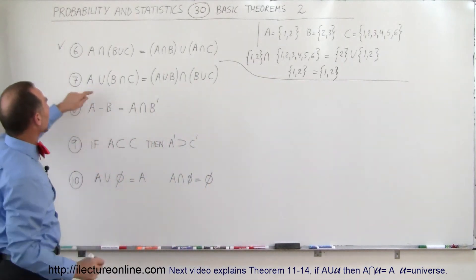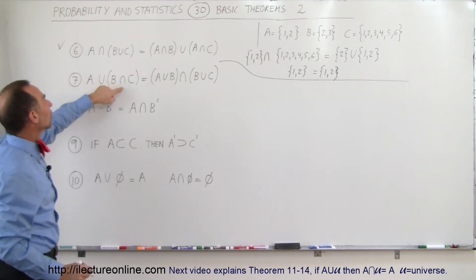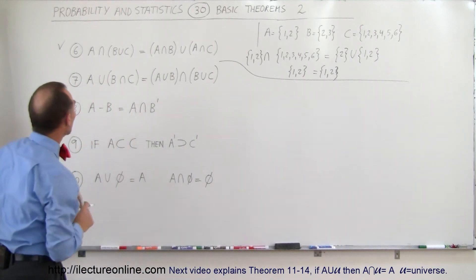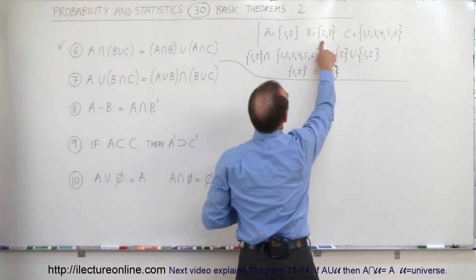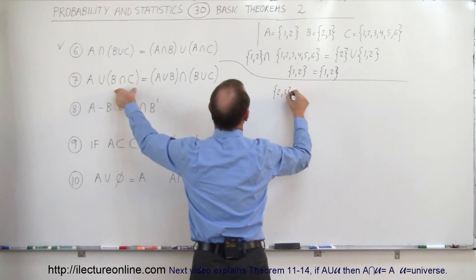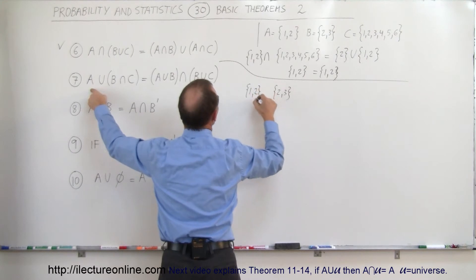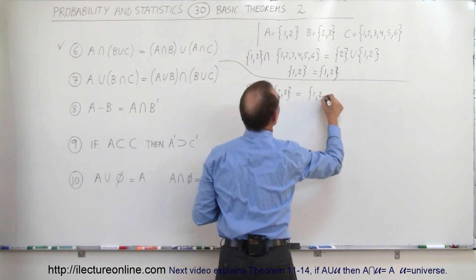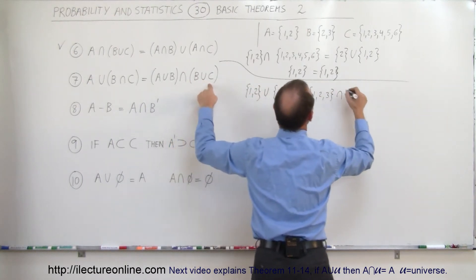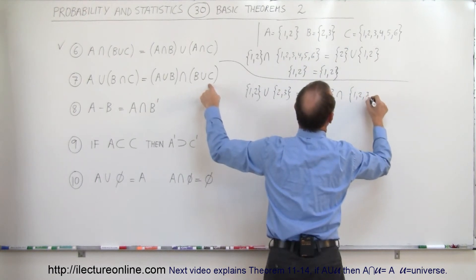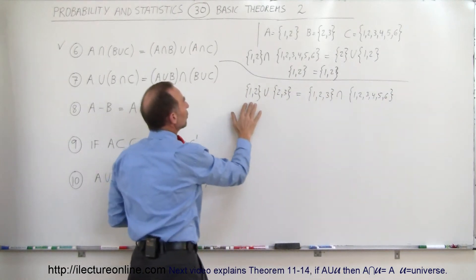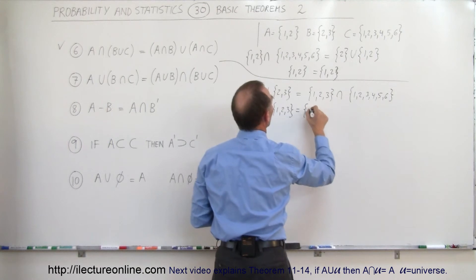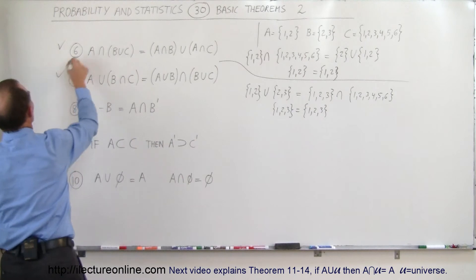Theorem seven states: the event A union B intersected with C should equal the event A union B, intersected with event B union C. So B intersected with C — what's common with B and C — would be two and three. We take A, which is one and two, and take the union of that. That should equal A union B, which is one, two, and three, and we take the intersection with B union C, which would be one, two, three, four, five, and six. The union gives one, two, and three, and the intersection also gives one, two, and three, so theorem seven works.